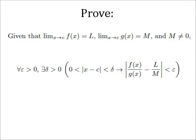So, given the definition of the limit, what we need to prove is that given that the limit as x approaches c of f of x is l, and that the limit as x approaches c of g of x is m, and m is not 0, for all values of epsilon, there exists a value of delta such that if the absolute value of x minus c is greater than 0 and less than delta, then the absolute value of f of x over g of x minus l over m is less than epsilon.